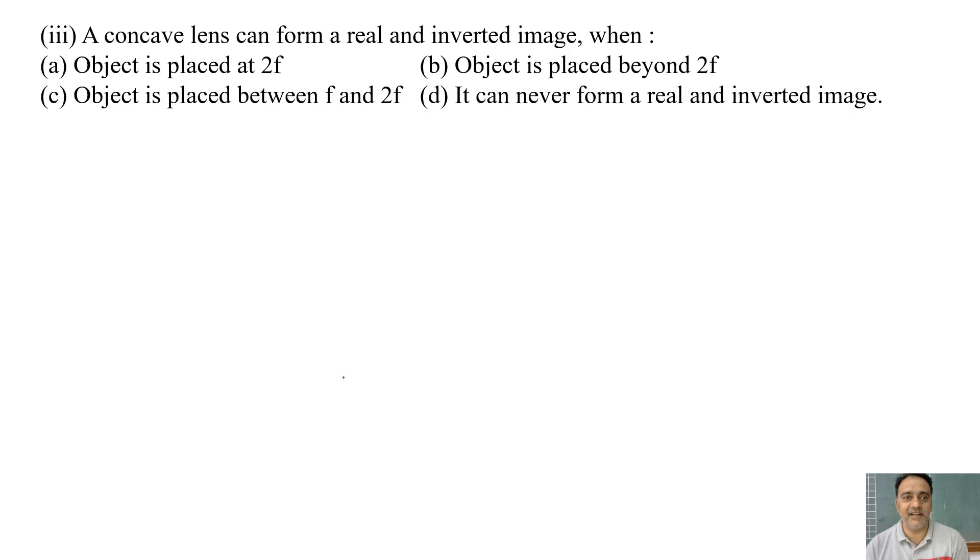So now we will move toward the next question. A concave lens can form a real and inverted image when: object is placed at 2f, object is placed beyond 2f, object is placed between f and 2f, it can never form a real and inverted image. Yes, that is the correct answer. Convex mein hum log ko dono image milta hai, convex lens mein real and virtual. Lekin concave lens mein humesha hum log ko virtual image milta hai. So the correct option is d, right?